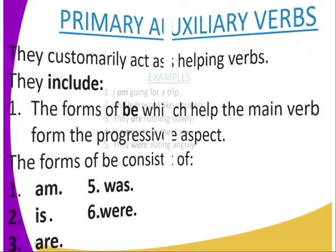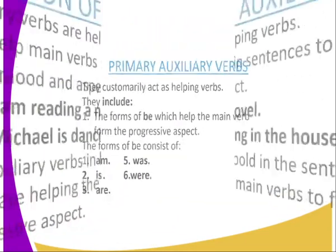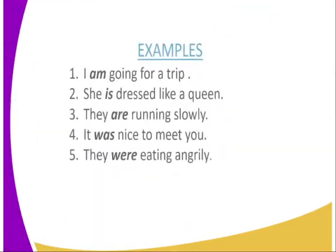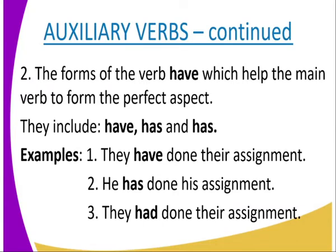The forms of 'be' help the main verb form the progressive aspect. For example: 'I am going for a trip' — 'am' is the form of 'be,' and 'going' is the progressive aspect. 'She is dressed like a queen' — 'is' is another form of 'be.' 'They are running slowly.' 'It was nice to meet you.' 'They were eating angrily.'